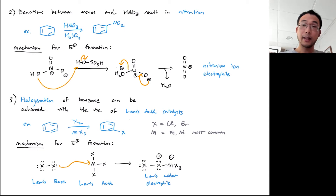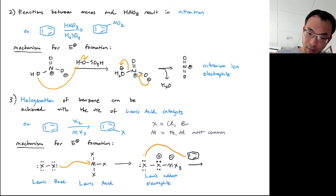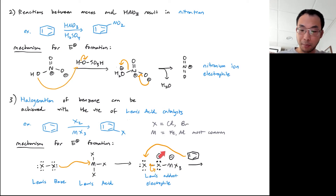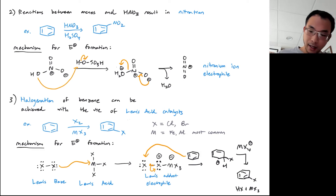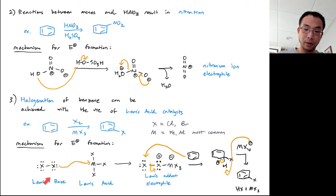Once the Lewis adduct is formed, the benzene nucleophile attacks the outer, neutral halogen. This pushes electron density from that sigma bond onto the electron sink, generating the MX4− anion as a byproduct. The benzene then attacks to form the arinium intermediate, which is deprotonated by the MX4− anion. Overall, HMX4 breaks down into HX and MX3, regenerating the catalyst ready for a second set of reactants.